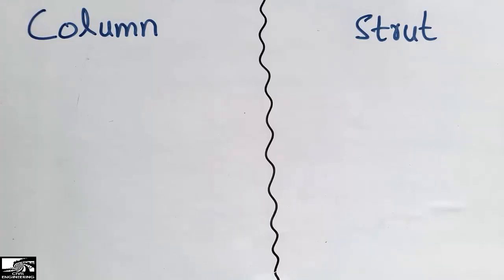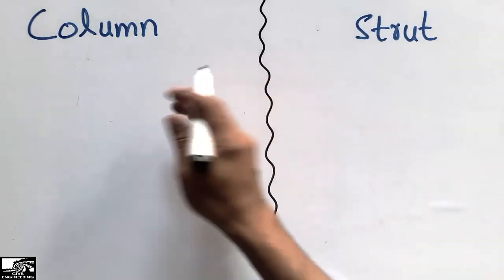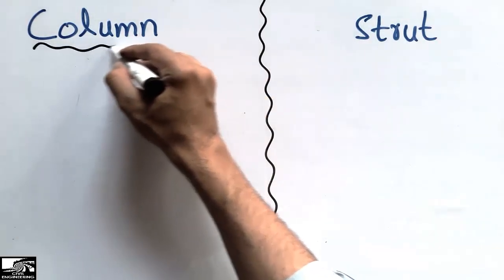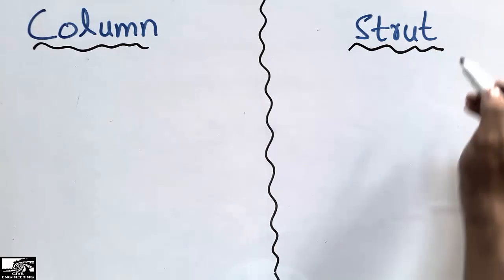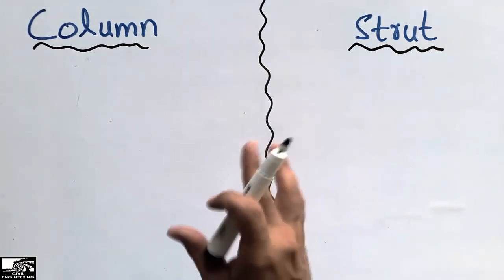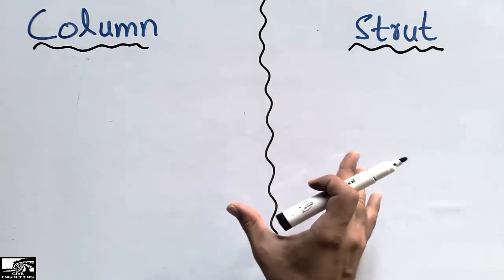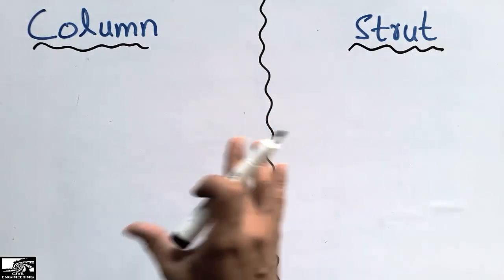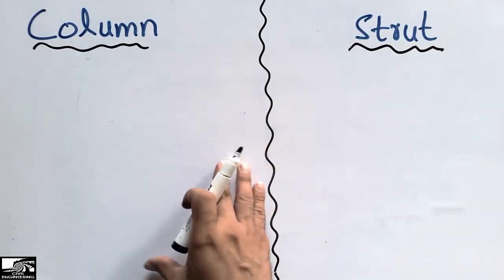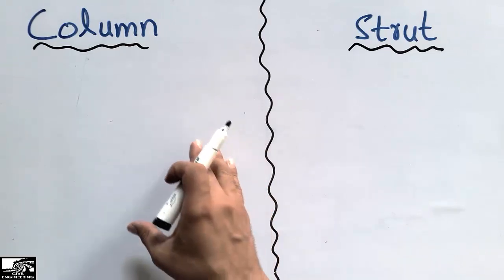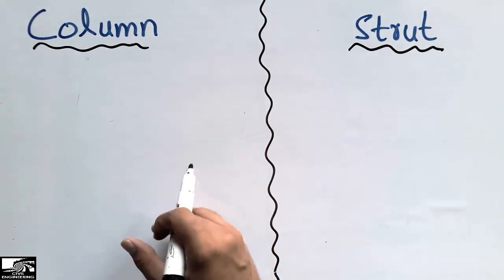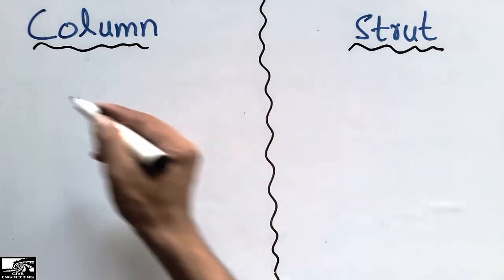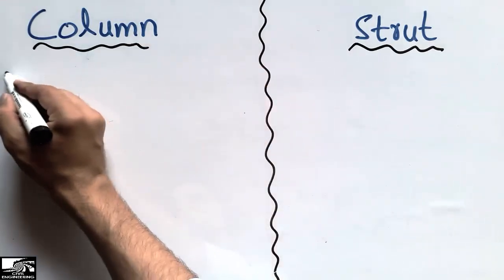Hello guys, welcome back to the Seven Engineering YouTube channel. Please subscribe to our channel for daily Seven Engineering videos. Today our lecture is about finding the difference between the column and the strut. There is some little difference between these two members. However, these two are the compressive members used in civil engineering structures, but in this lecture I will define and explain their differences with diagrams.